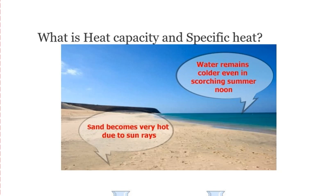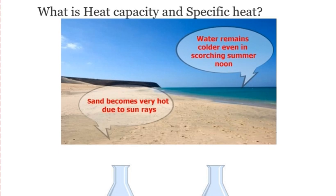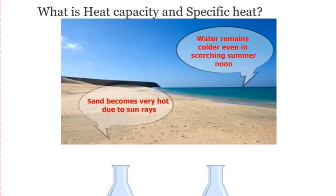For example, when walking on the beach, the sand becomes very hot due to sun rays while water remains colder even in the scorching summer. What is the concept behind this? Both the sand and water are receiving the same amount of sun rays — the same amount of heat energy. So the question is: why is there a difference in the temperature of sand and water?